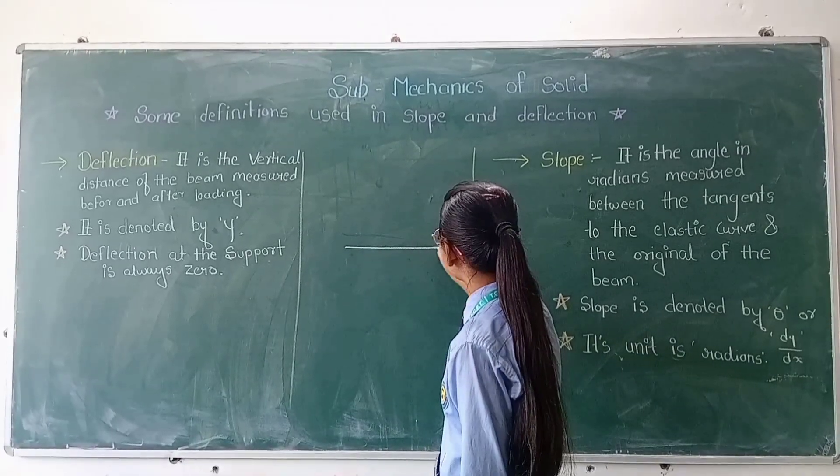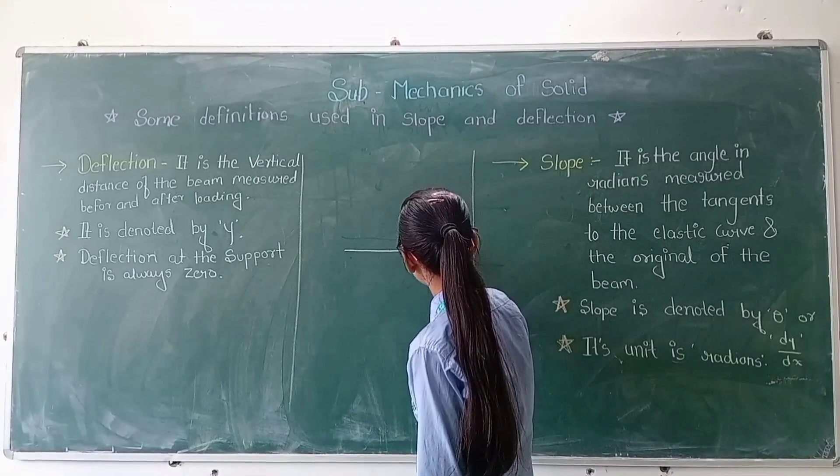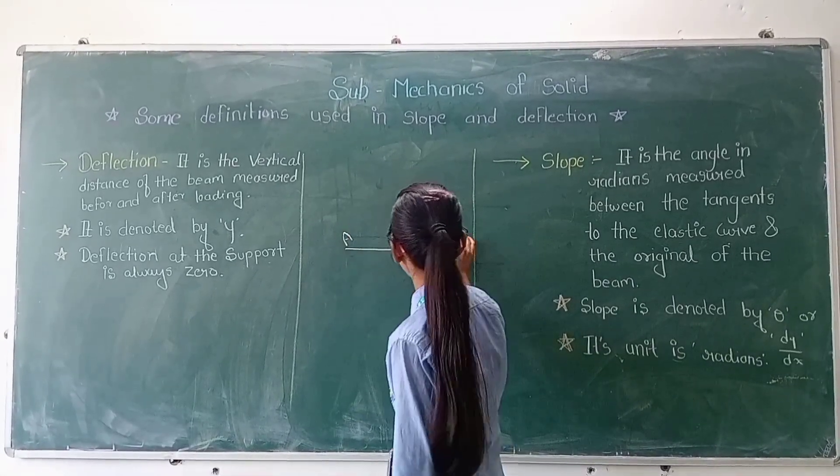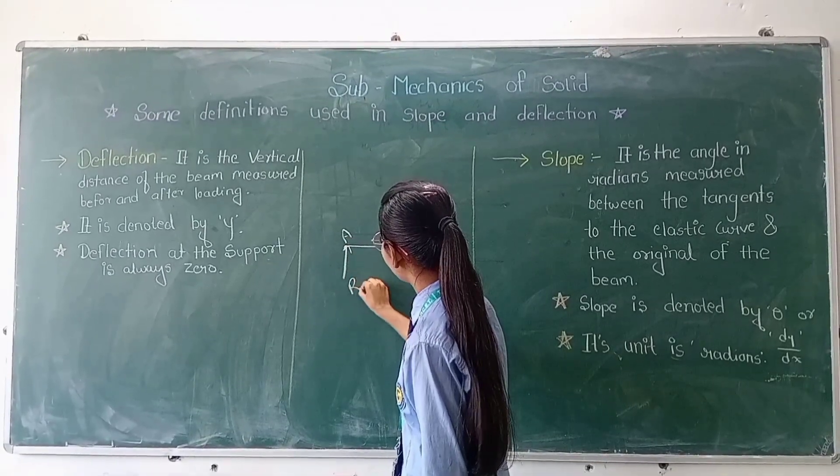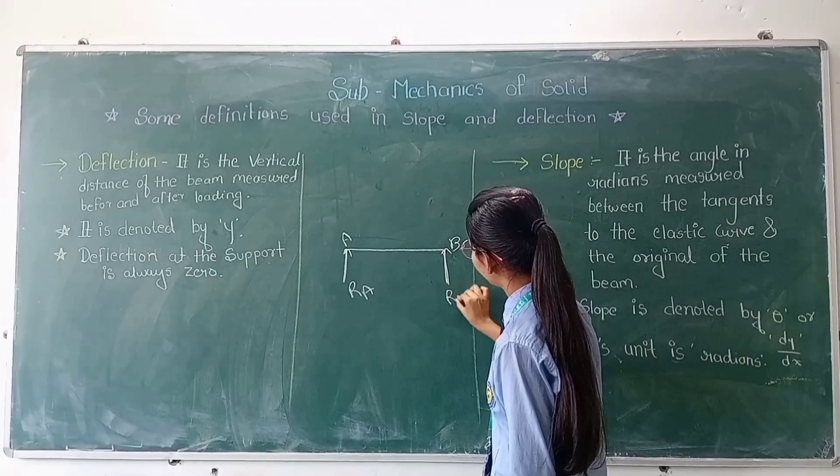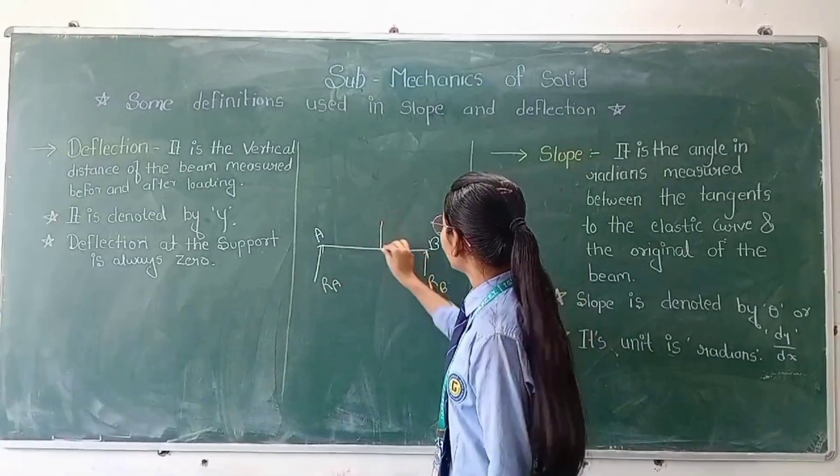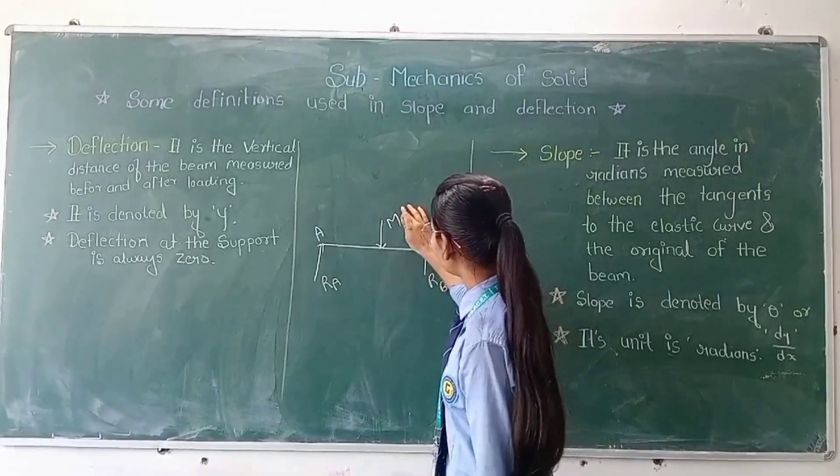I consider a simply supported beam at point A and B. The reaction at point A is RA and the reaction at point B is RB. Suppose there is a load M acting at the center of the beam.